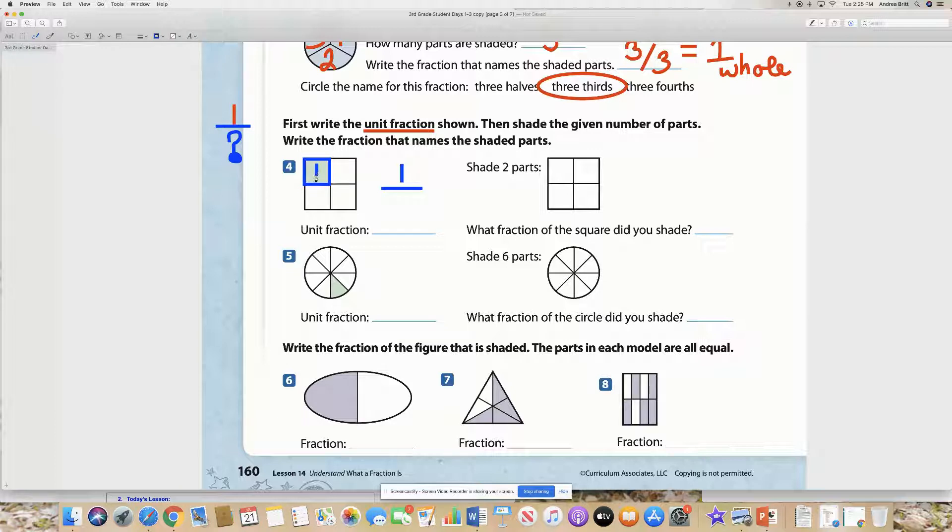And then your denominator is going to be how many ever parts there are in the whole. So you have one shaded out of one, two, three, four out of four parts. So the unit fraction is one fourth.